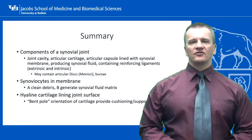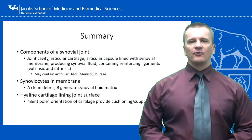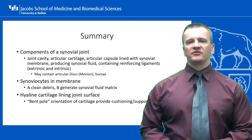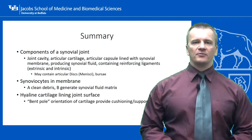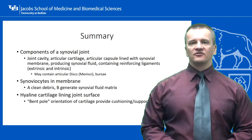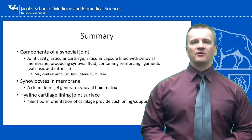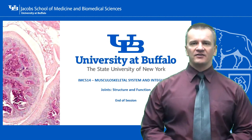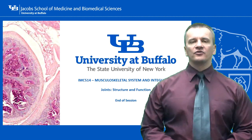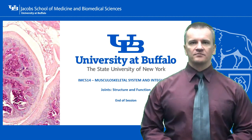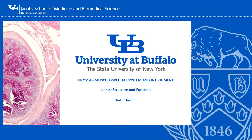That concludes this session on joint structure and function, and wraps up our discussion of normal musculoskeletal form and function. In the next session, we will start looking at clinical examples of abnormal morphology and disease processes, beginning with a look at connective tissue disorders.